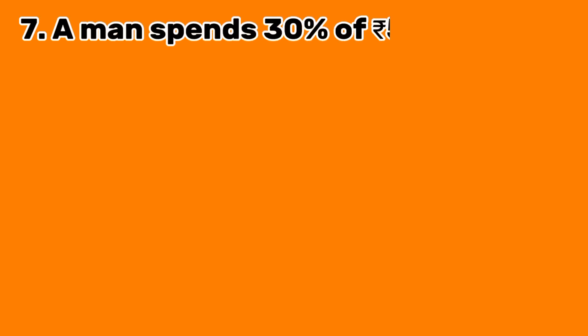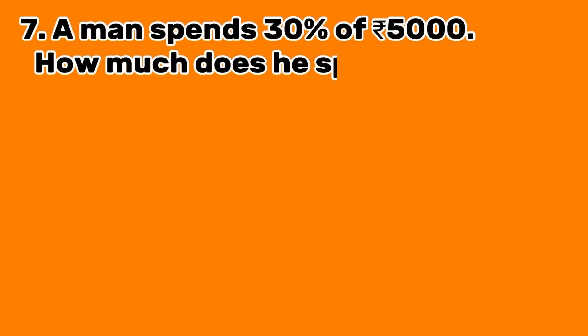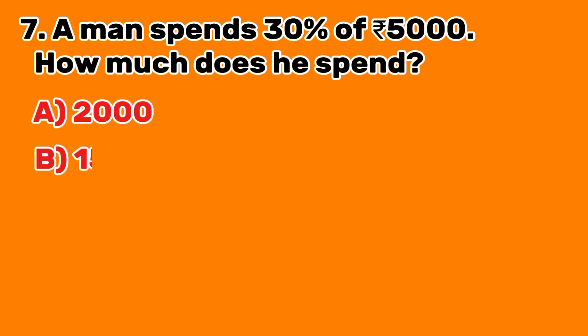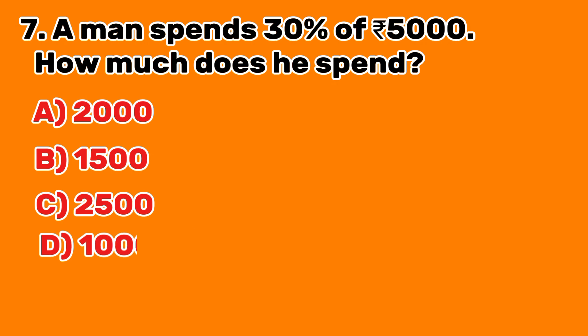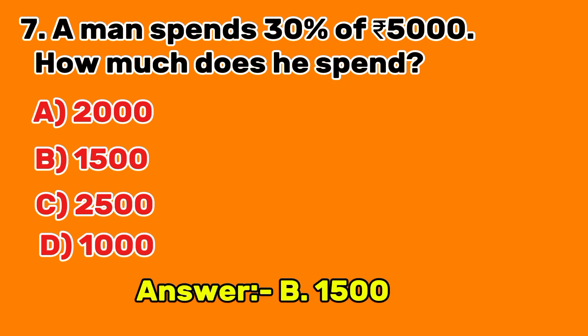Question 7: A man spends 30% of 5,000 Indian rupees. How much does he spend? A. 2,000. B. 1,500. C. 2,500. D. 1,000. Answer B: 1,500.